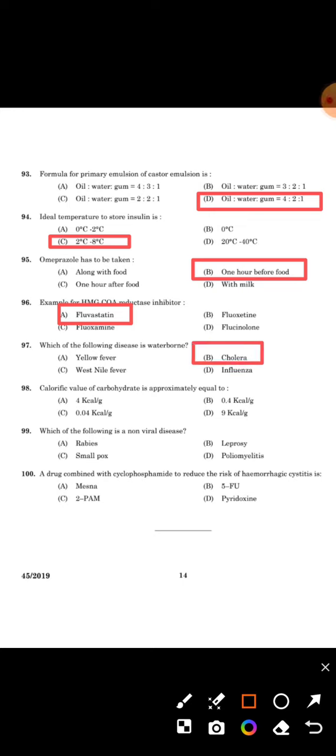Next question: calorific value of carbohydrates is approximately equal to? The answer is option A, 4 kilocalories per gram.